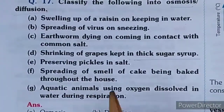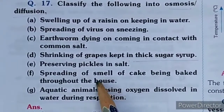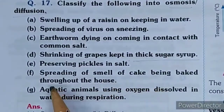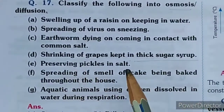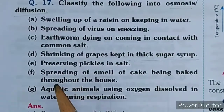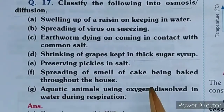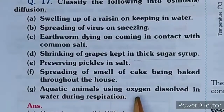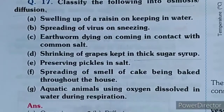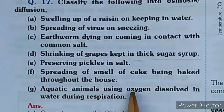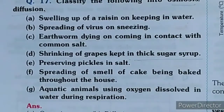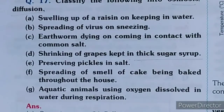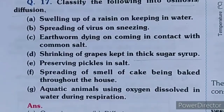Smell of cake spreading through the house - this is diffusion, meaning intermixing of particles. Aquatic animals using oxygen dissolved in water during respiration - oxygen intermixes with water particles, so this process is again diffusion.